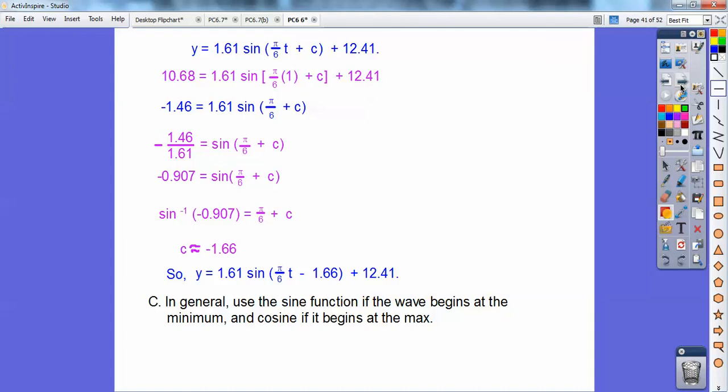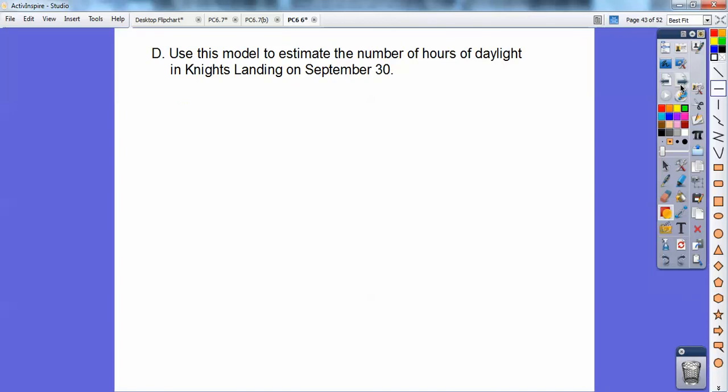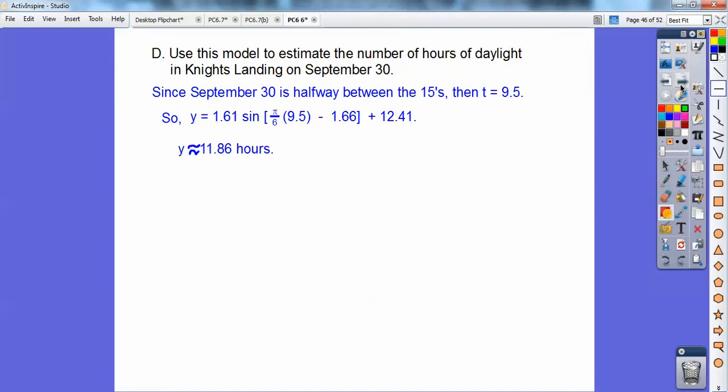In general, we're going to use the sine function if the wave begins at the minimum and cosine if it begins at the maximum. So the only difference is the phase shift. This graph began at the minimum and ended at the minimum, so I'm going to use the sine. Use this model to estimate the number of hours of daylight in Knight's Landing on September 30th. Remember these were on the 15th, so September 30th is halfway between the 15th, so September is the ninth month, so it becomes your time is 9.5. So I'm going to substitute in 9.5 into that equation. We have calculators that'll crank that all out, and you get about 11.86 hours.